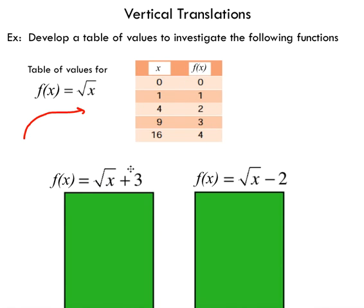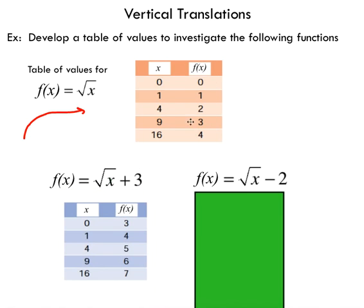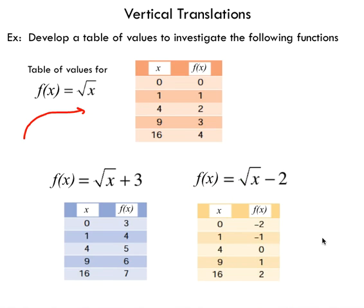What happens if we add three onto the end of our function? If I substitute the same X values in, I want to see the effect on the Y values as a result of adding three. It makes sense that adding three to each Y value gives this new table of values. Adding three results in an increase in my Y values. Likewise, if I subtract two off the end, you should see a decrease by two compared to our base graph.